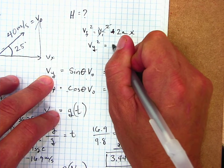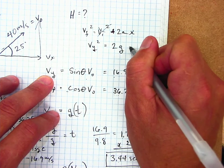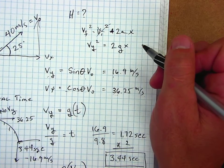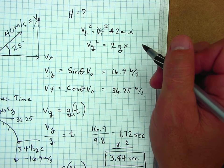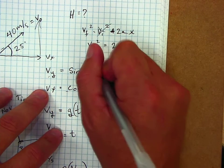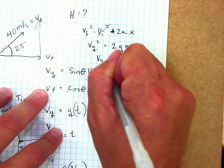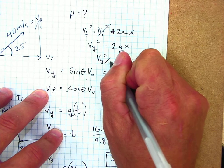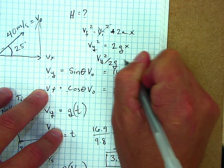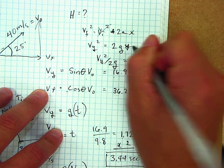This is equal to 2 times the gravity times x. So v_y squared divided by 2 times the gravity will give me the height, the y, the height.